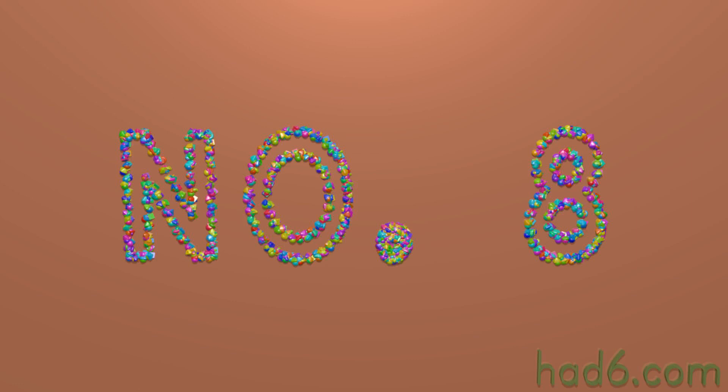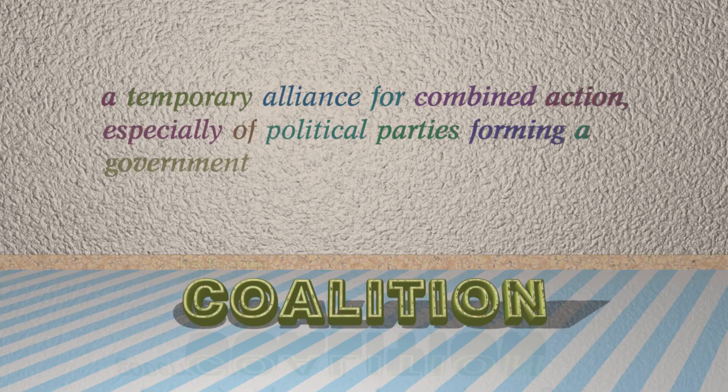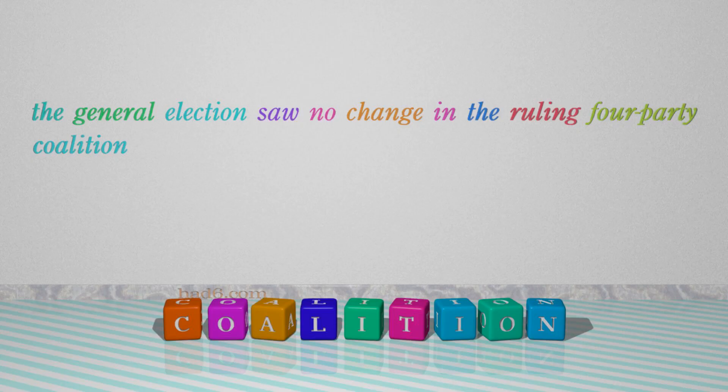Number 8: Coalition. Which means a temporary alliance for combined action, especially of political parties forming a government. For example: the general election saw no change in the ruling four-party coalition.